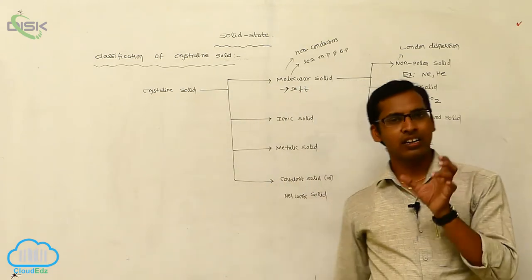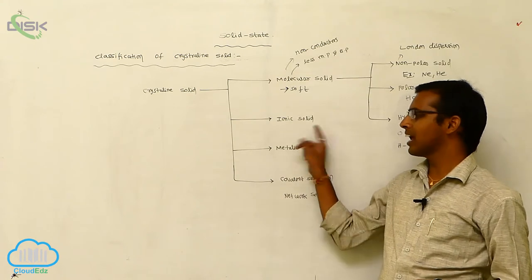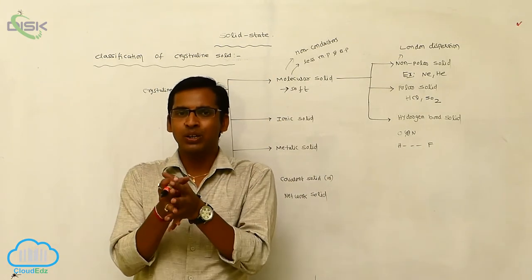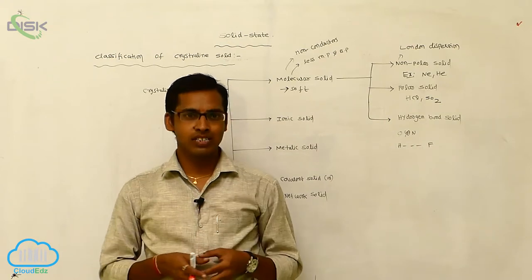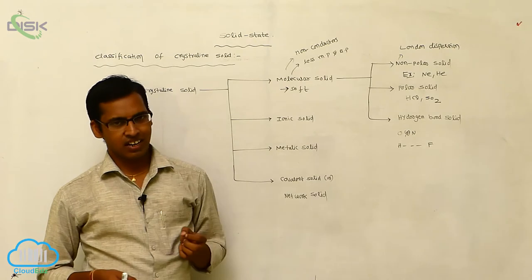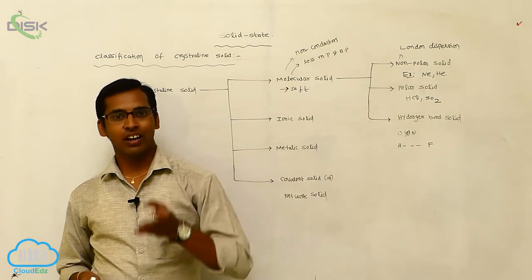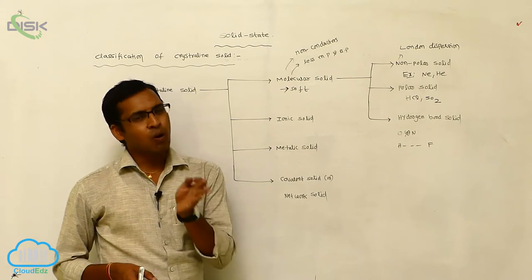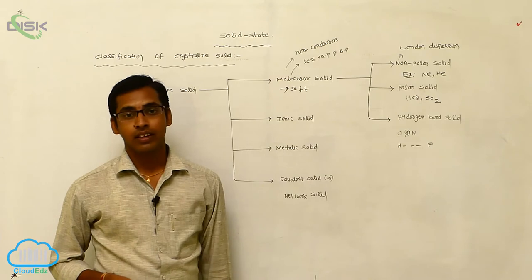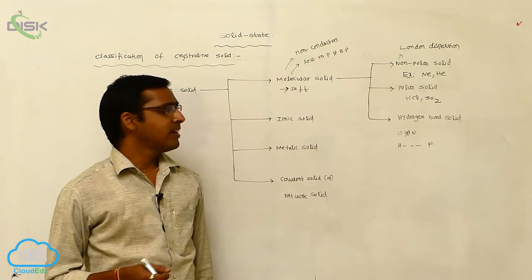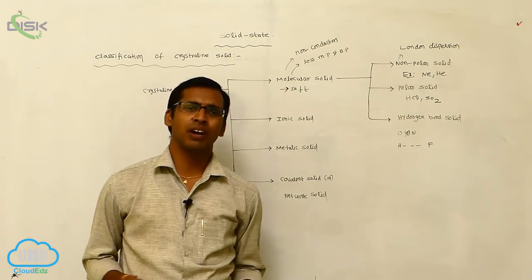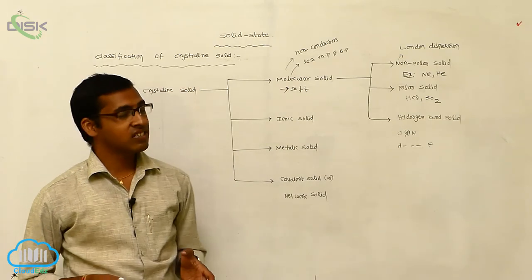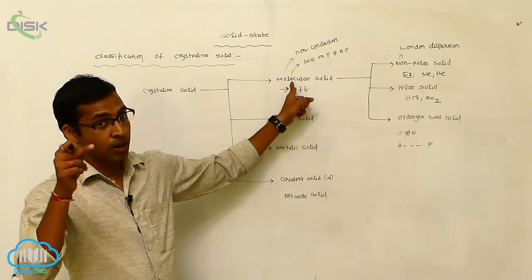In ionic solids, ionic constituent particles are present. Cations and anions are surrounded together around the nucleus, making ionic solids very hard and brittle. In the solid state, ionic solids are non-conductors, but when dissolved in water or in the molten state, they become conductors. Examples of ionic solids are sodium chloride, cesium chloride, and sodium bromide. Ionic bond is present in ionic solids, whereas molecular bonding is present in molecular solids.